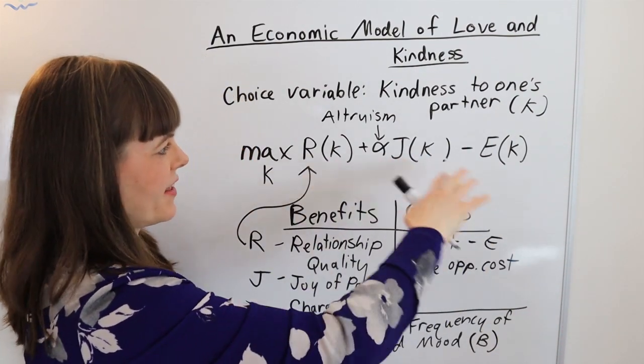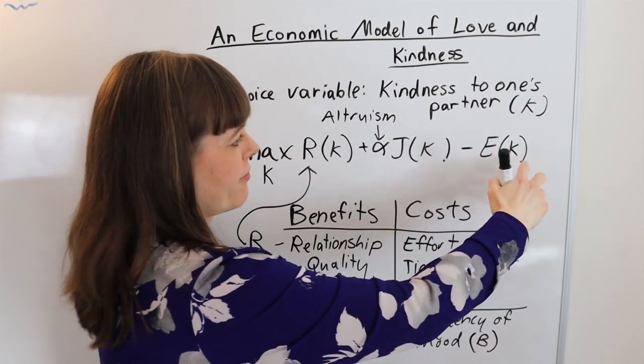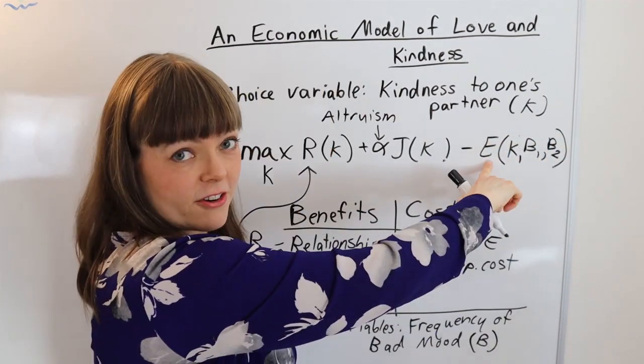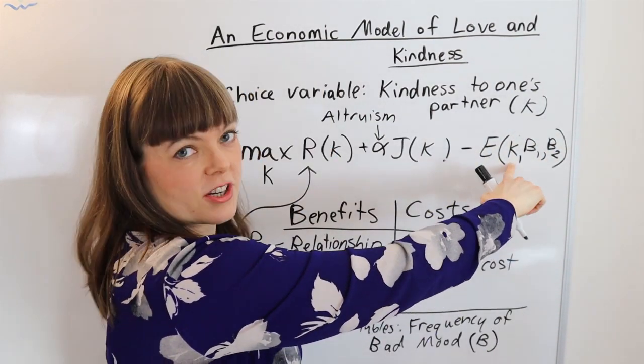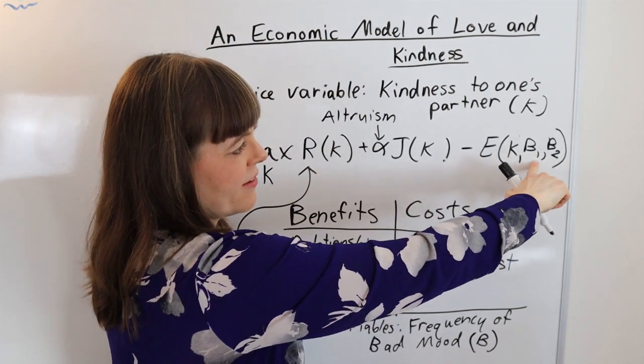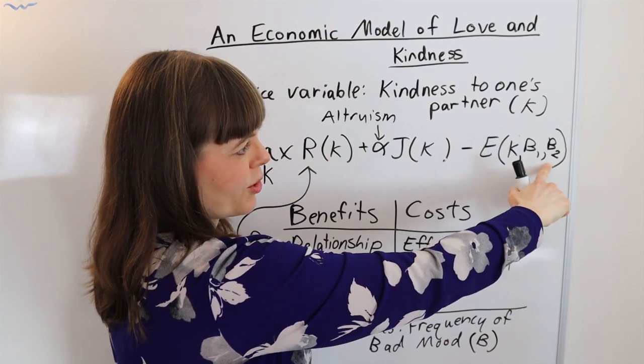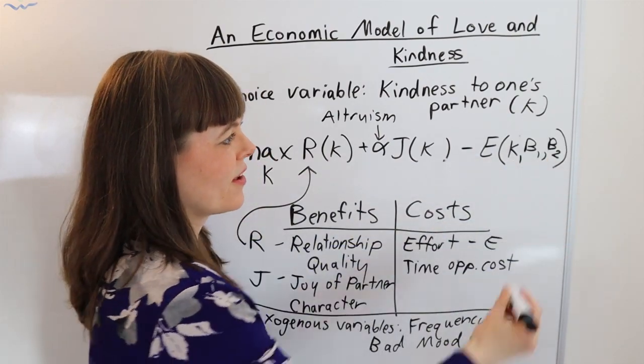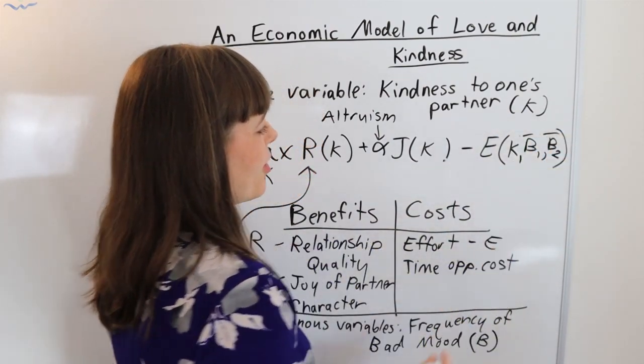And of course where do those fit in this model? Well they fit in the effort function. So the effort you have to exert is not only a function of how kind you are to your partner, but it's also a function of how frequently you are in a bad mood and how frequently they are in a bad mood. And those are of course exogenous variables.